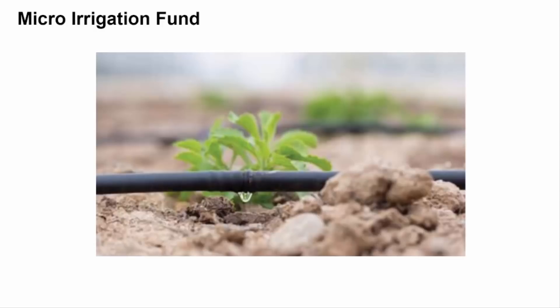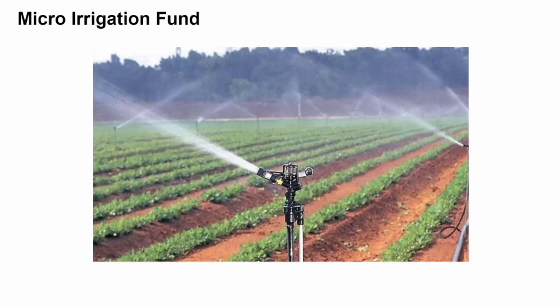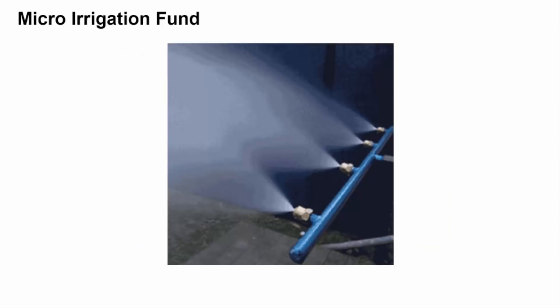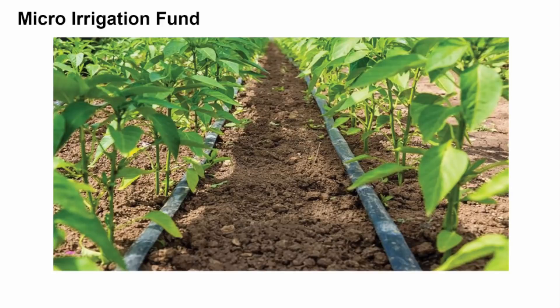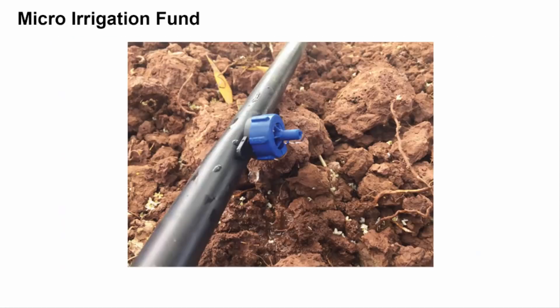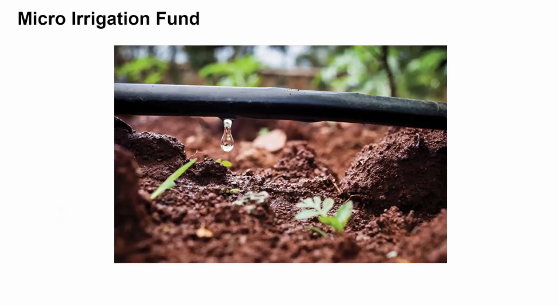What is micro-irrigation? It is a modern method of irrigation. By this method, water is supplied to the crops through drippers, sprinklers, foggers and by other emitters on the surface or under the surface of the crops. Water is run through pipes that have small holes in them. These pipes are buried under the soil or laid slightly above the ground next to the crops. Water slowly drips onto the crop roots and stems.